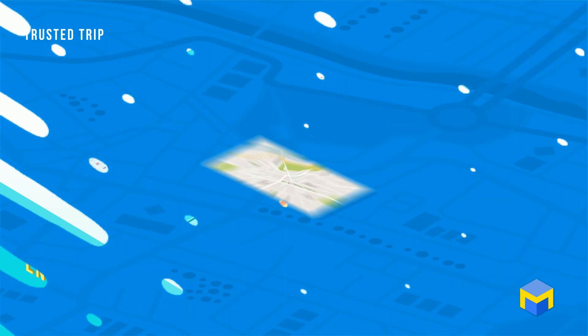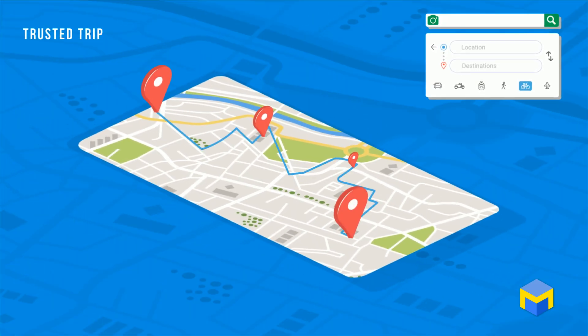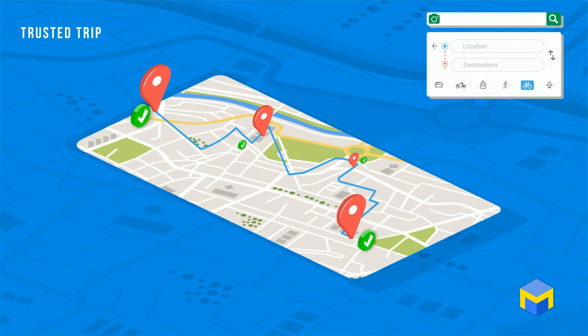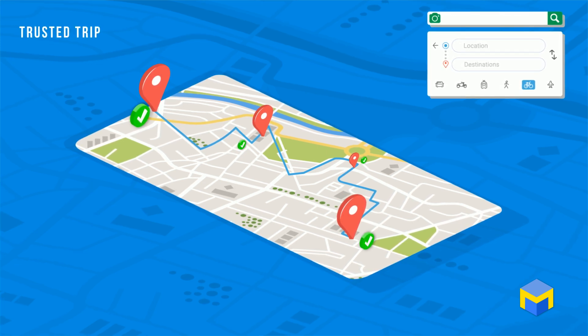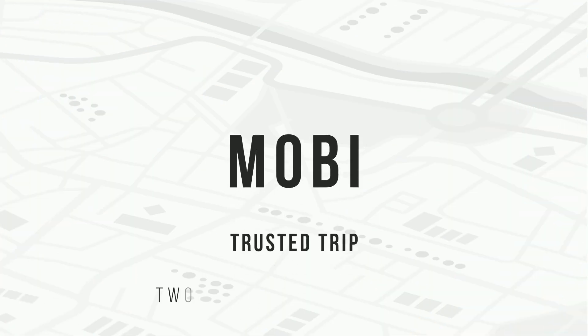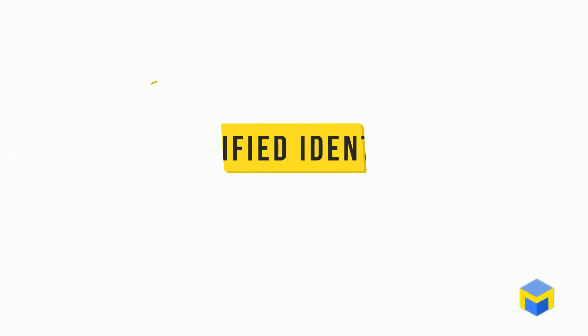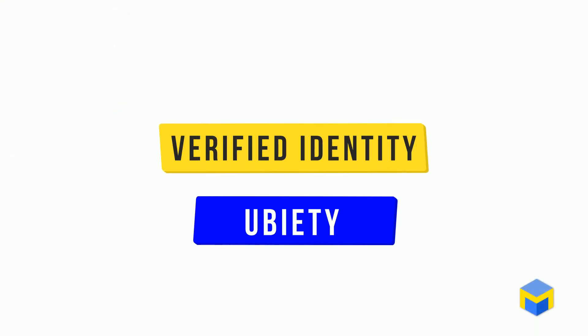Mobi defines a Trusted Trip as a journey whose unique attributes are validated by authorized entities within a decentralized network. Mobi Trusted Trip has two essential components: Verified Identity and Ubiety Certified Through Time.